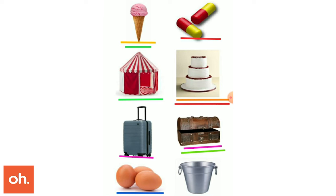We can say that all these three shapes are made up of a combination of solids. For the ice cream, we will require the formula 2/3 πr³ to find the volume, since the top half is a hemisphere. We will also require the formula πr²h to find the volume of the medicine and the cake, since both of them are cylinders.